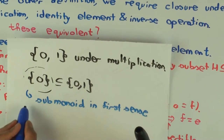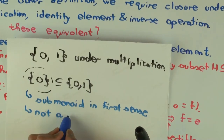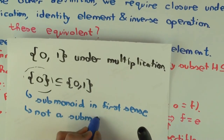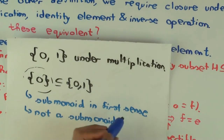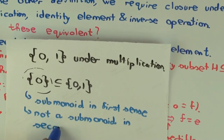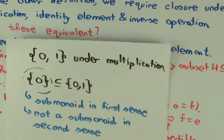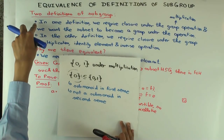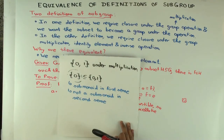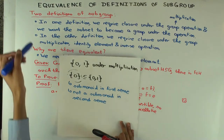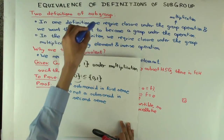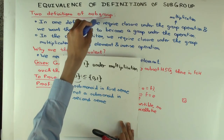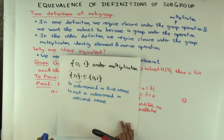This shows that for submonoids there are two different senses of the word, and typically people mean it in the second sense, but you have to be careful. The same is true in ring theory: for a ring with one, there are two definitions of subring. One definition insists the subring has the same identity element as the whole ring. The other only requires the subring to have some identity of its own. That first definition can give you more subrings than the one that insists they share the same identity.